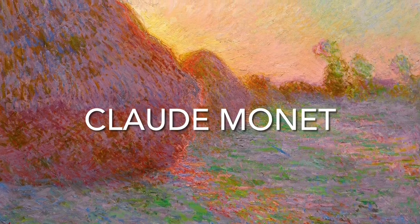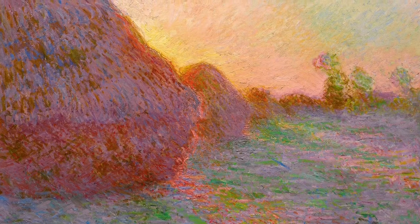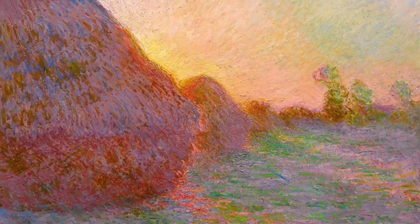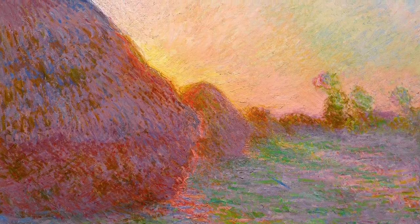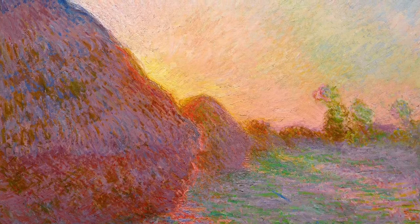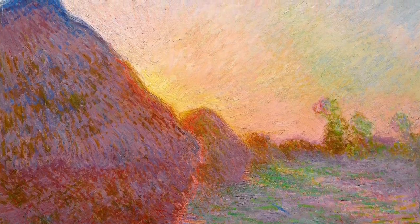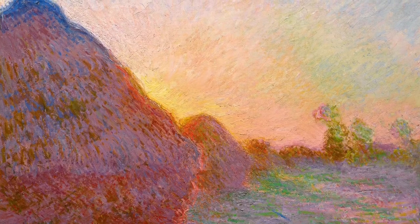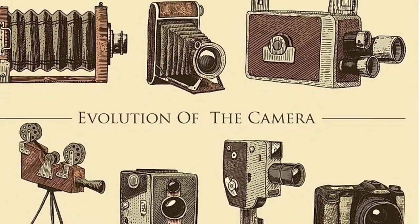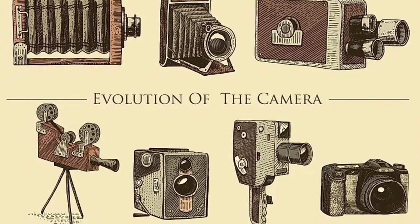Impressionism was the style of art in the mid to late 19th century. Impressionism wasn't concerned with overbearing detail — it was more about capturing a fleeting glimpse of light through color and brushwork. This painting of haystacks by Claude Monet depicts warmth from the sun, something the early primitive camera could not do.